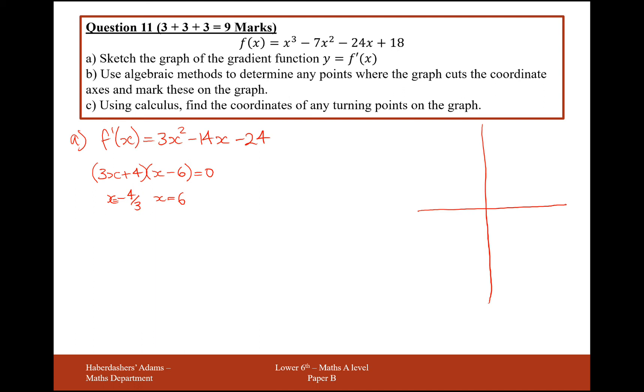So what we'll do first is plot those coordinates. So we'll have one at minus 4 thirds, 0. And we'll have another one over here at 6, 0.